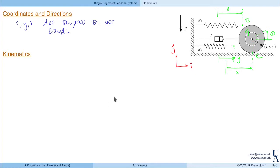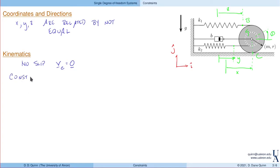In terms of kinematics, we need to relate these coordinates. The no-slip condition implies that the velocity of point C equals zero — there's no relative motion between point C on the disk and the ground. Since the ground has zero velocity, the contact point has zero velocity. We can develop constraint equations using velocity.